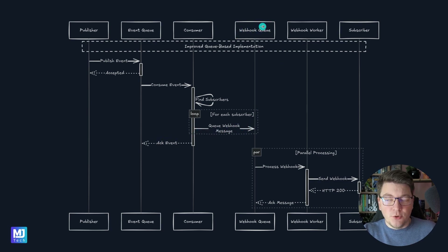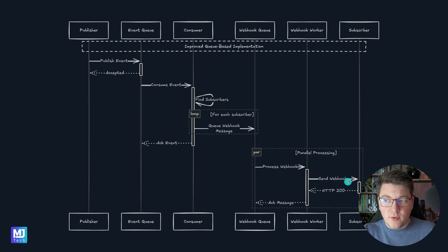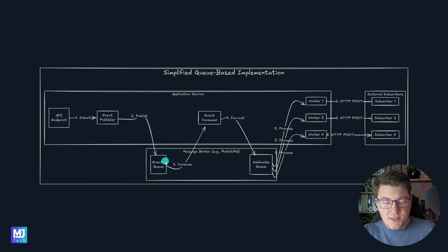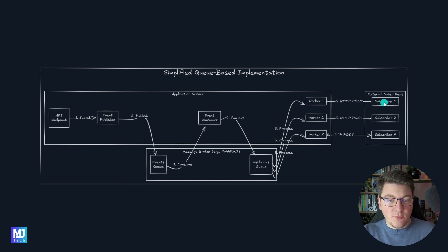These messages land on a separate queue, which means we also need a separate consumer. We consume the message from the webhook queue, and here we are only responsible for sending one HTTP request to the respective subscriber. So now we've reduced the scope of the overall work — instead of sending a large number of requests to all of our subscribers, we are only handling one subscriber at a time by consuming a respective message from the queue. On a component level, we still have our application service, but now we're introducing a message broker. We publish an event to the event queue, a consumer fans out this message to all possible subscribers by publishing a separate message, and then any number of consumers can handle those messages and send requests to our external subscribers.